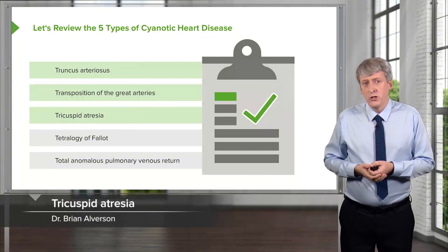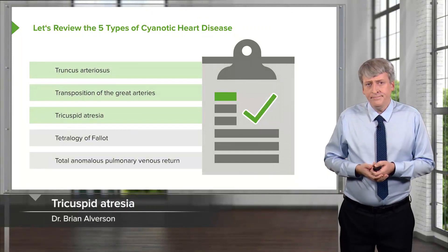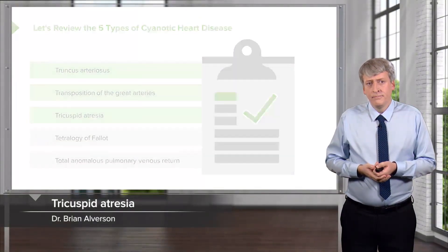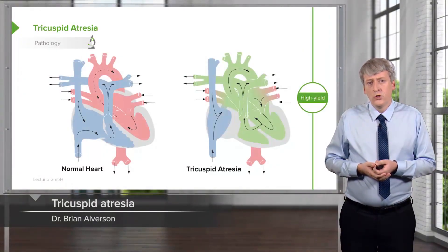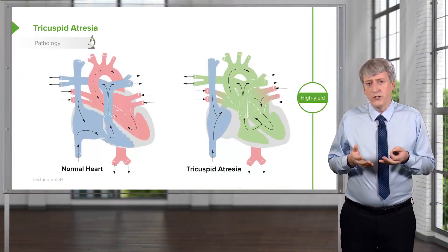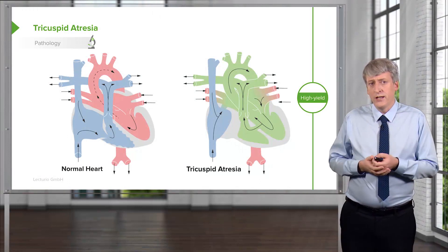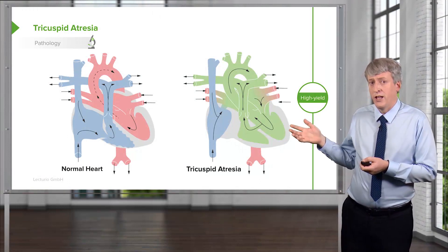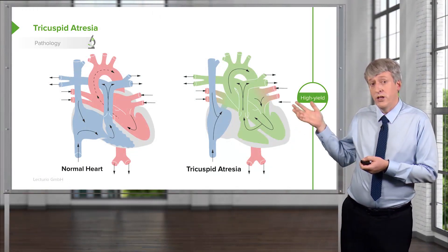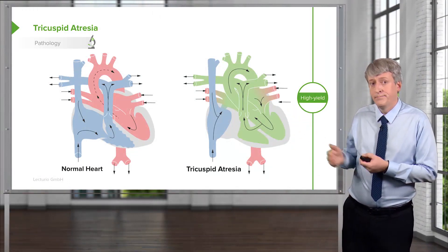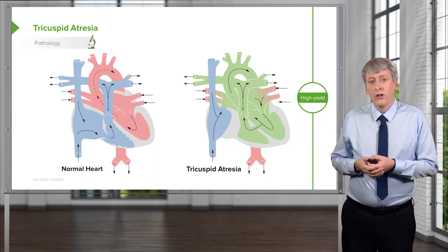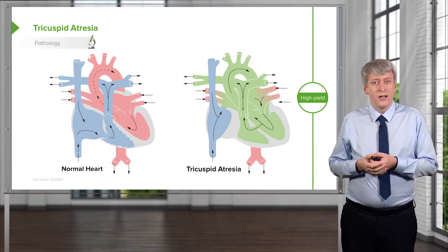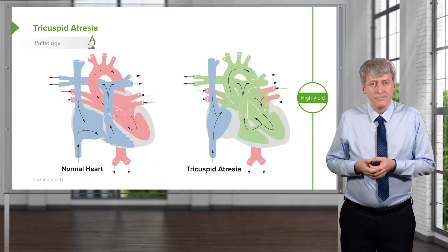Let's move on to tricuspid atresia. Here you can see an example — on the left part of your slide you can see a normal heart, and on the right side you can see tricuspid atresia.